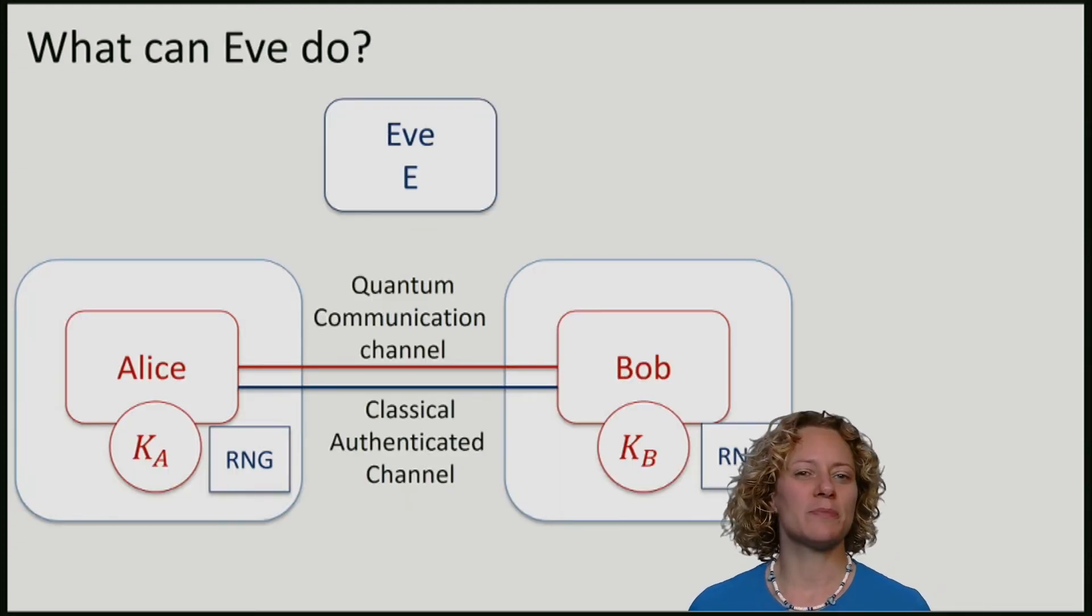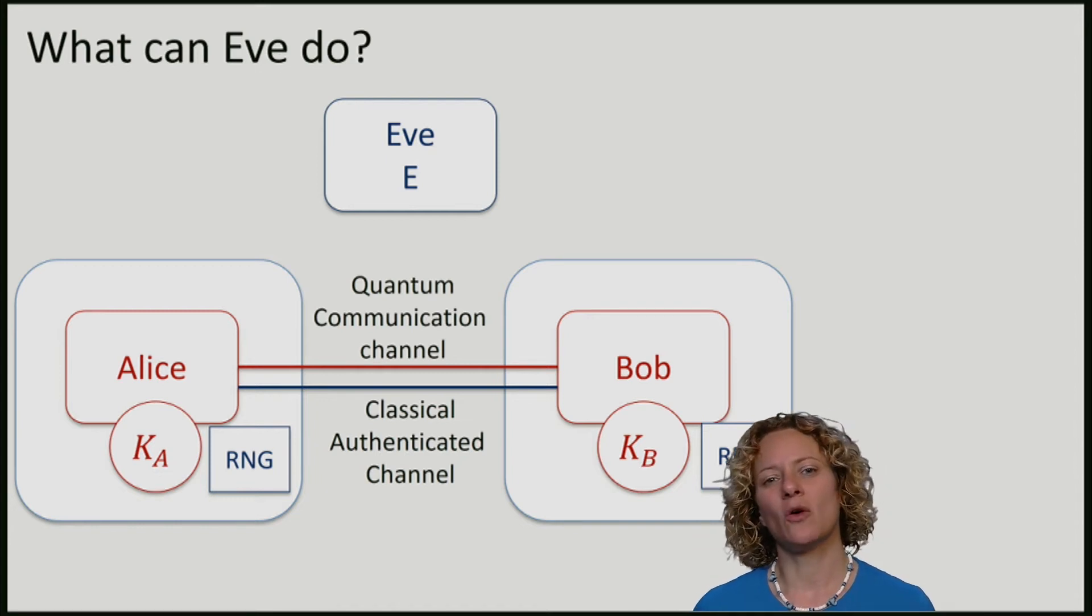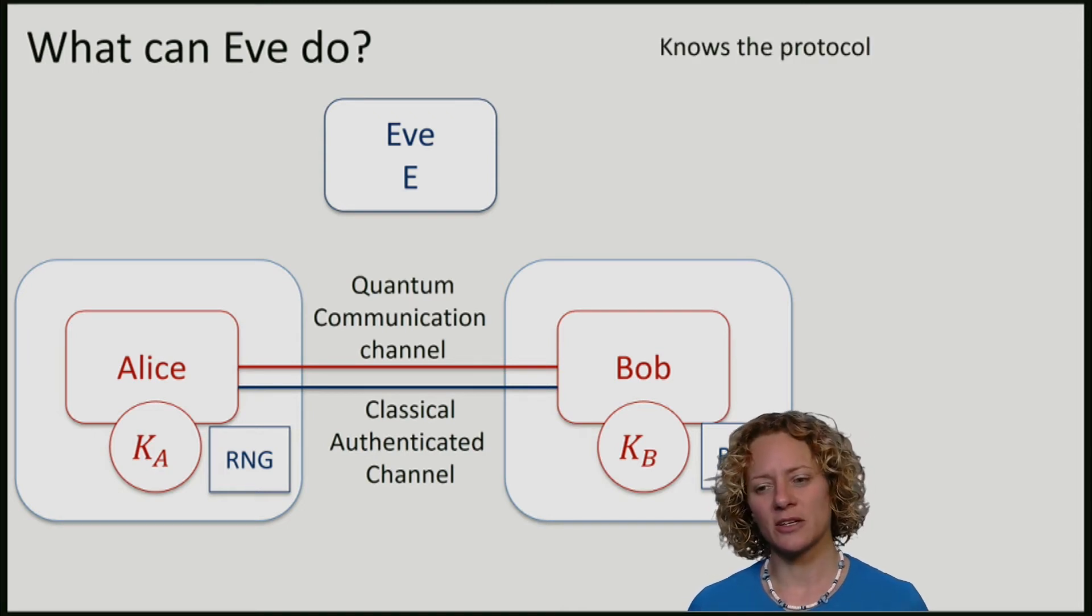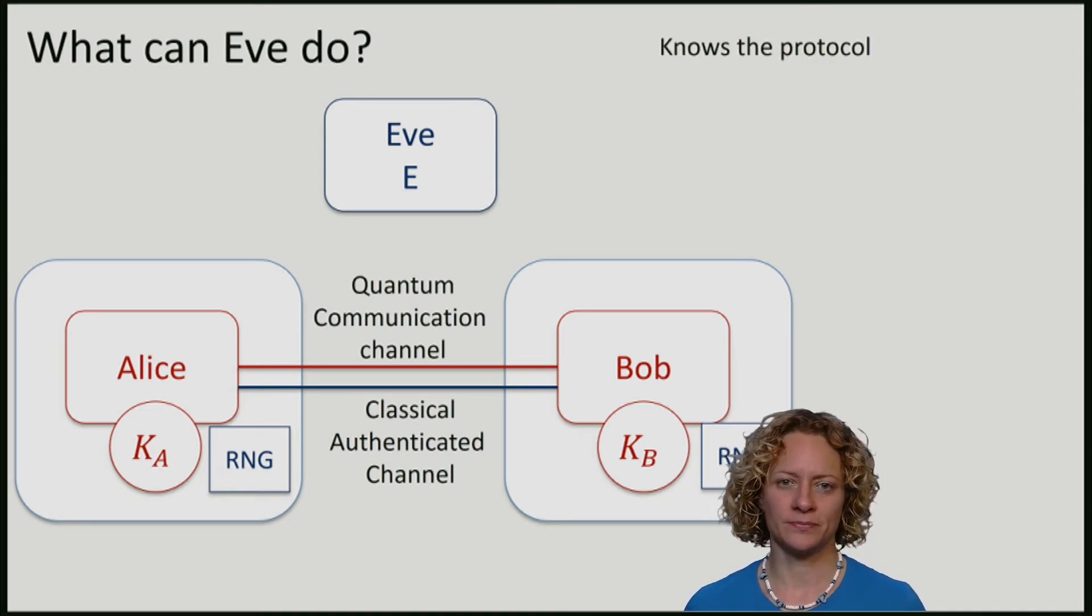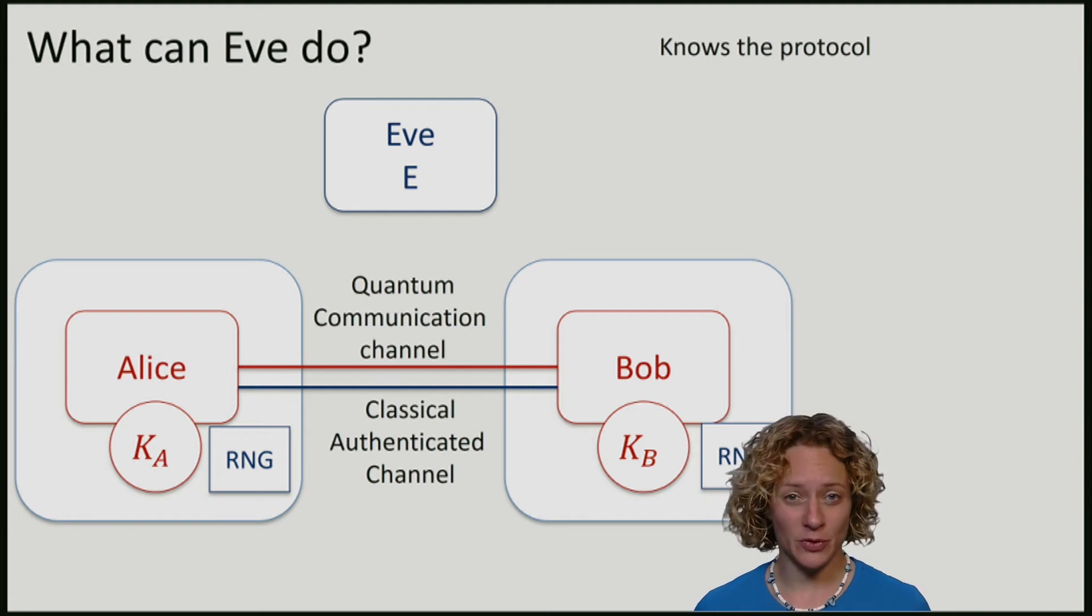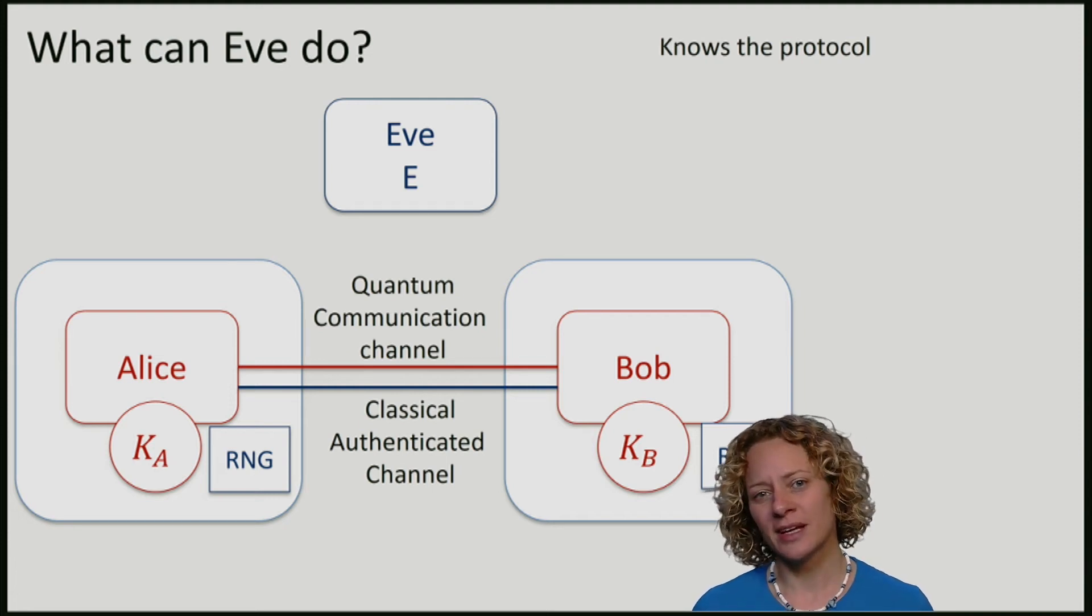The first thing we should remember is that in all cryptographic protocols, the attacker knows the protocol. Eve knows precisely what Alice and Bob are going to do, except for any random numbers that the protocol might ask them to produce.